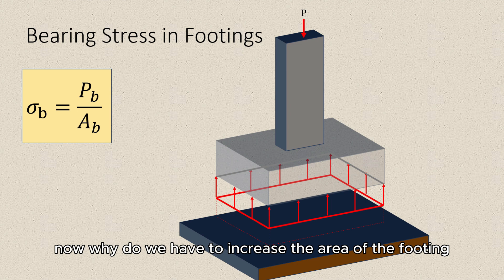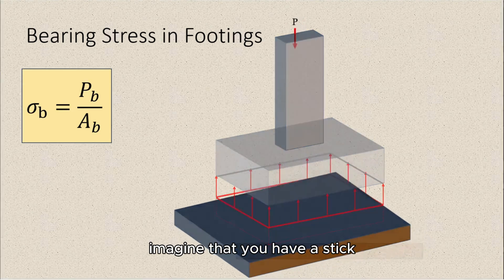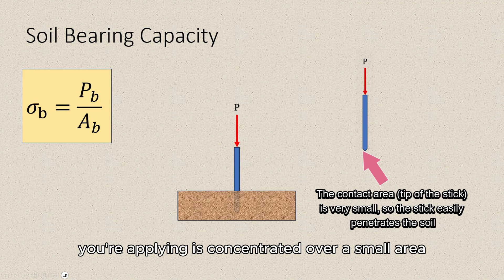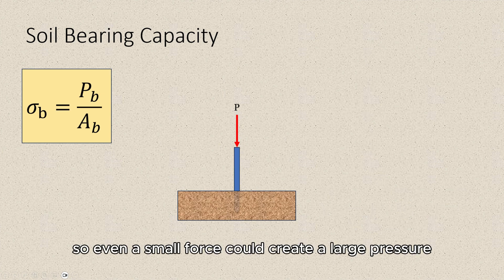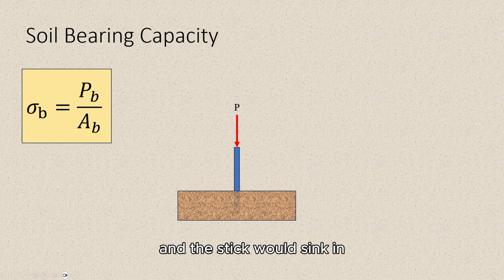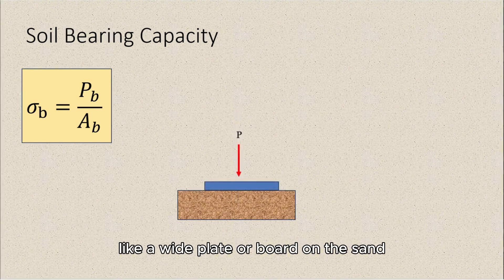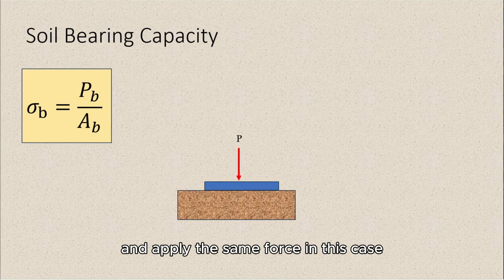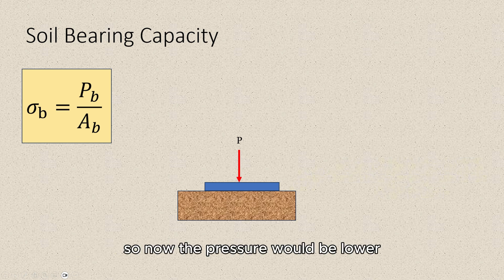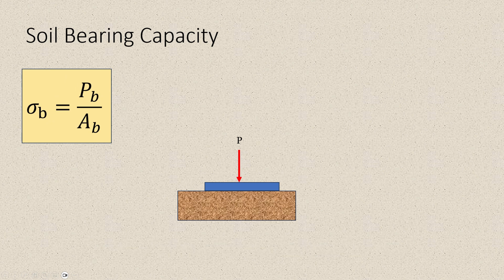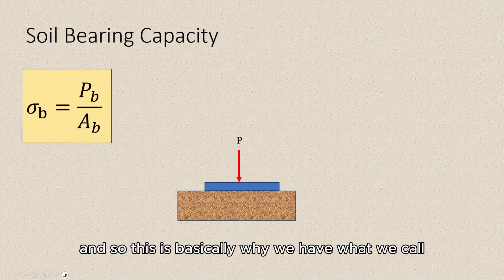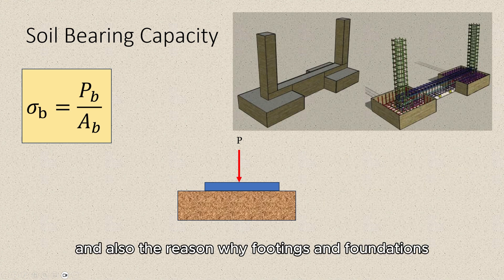Why do we have to increase the area of the footing in our structures? Imagine you have a stick, and you push it into sand — it easily penetrates because the force is concentrated over a small area, the tip of the stick. Even a small force could create a large pressure exceeding the sand's bearing capacity, causing the sand to fail locally and the stick to sink in. Now place a wide flat plate on the sand and apply the same force — the load is distributed over a much larger area, reducing the pressure below the sand's bearing capacity. The sand can now support the load without failing or excessive settlement. This is basically why we have bearing plates, and also the reason why footings and foundations are built over a large surface area.